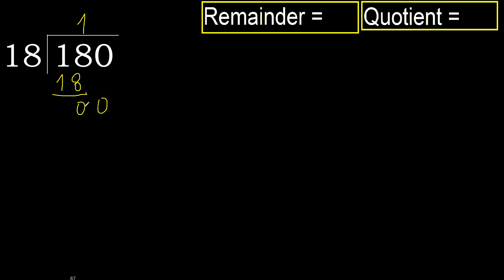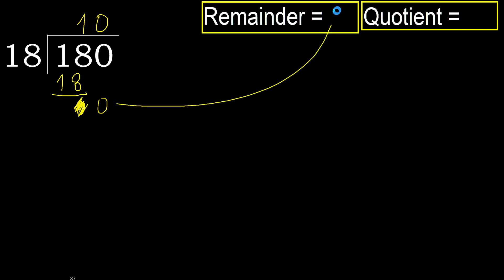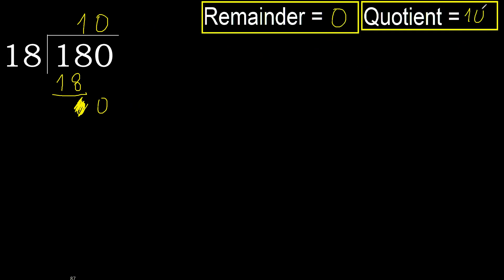Next, eliminate 0 on this side. 0 is less, therefore next — that is not a number, therefore finish it. Always complete with 0; complete because here finish it with this number. 180 divided by 18 is 10.